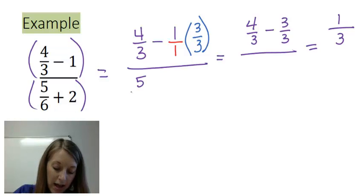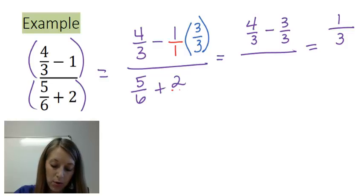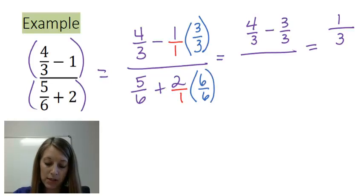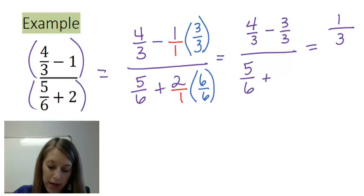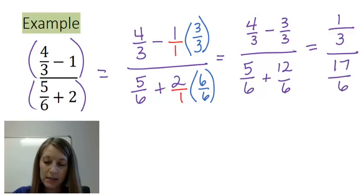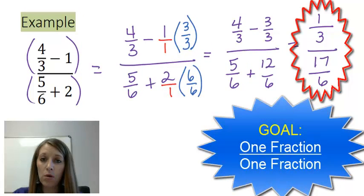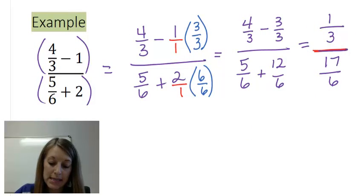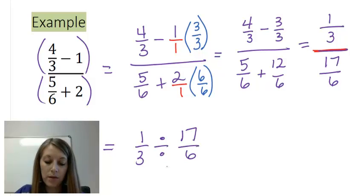For the denominator, I write five-sixths plus two, making two into two over one. The LCD between 6 and 1 is 6, so I multiply the right fraction by six over six. That gives me five-sixths plus twelve-sixths. Adding: five plus twelve gives me seventeen-sixths. I've now satisfied the second half of my goal — one fraction on the bottom. Now I can change this into a division problem: one-third divided by seventeen over six.